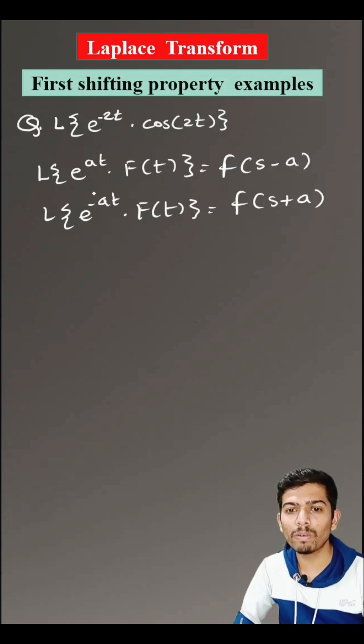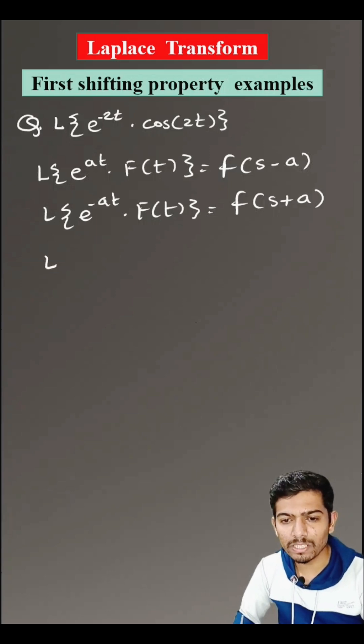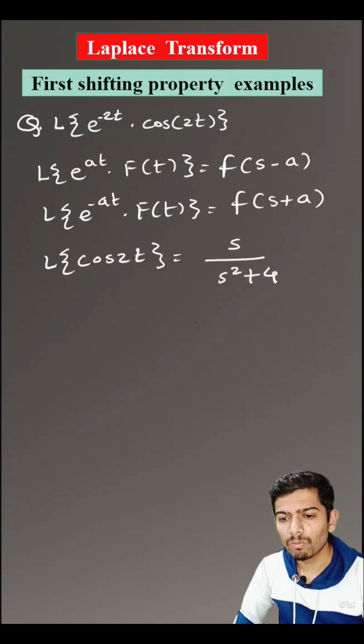We have negative sign to the e to the power. Now, what we will do is, we will find out the f of s by using cos of 2t. So Laplace transform of cos of 2t is equals to s divided by s square plus 4.